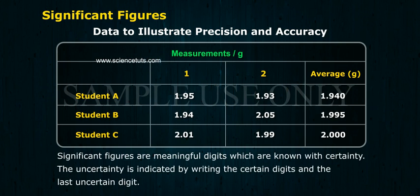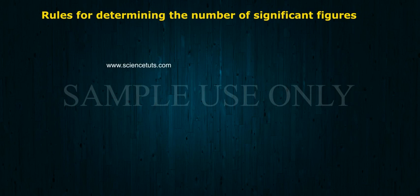Significant figures are meaningful digits which are known with certainty. The uncertainty is indicated by writing the certain digits and the last uncertain digit. These are the rules for determining the number of significant figures stated below.